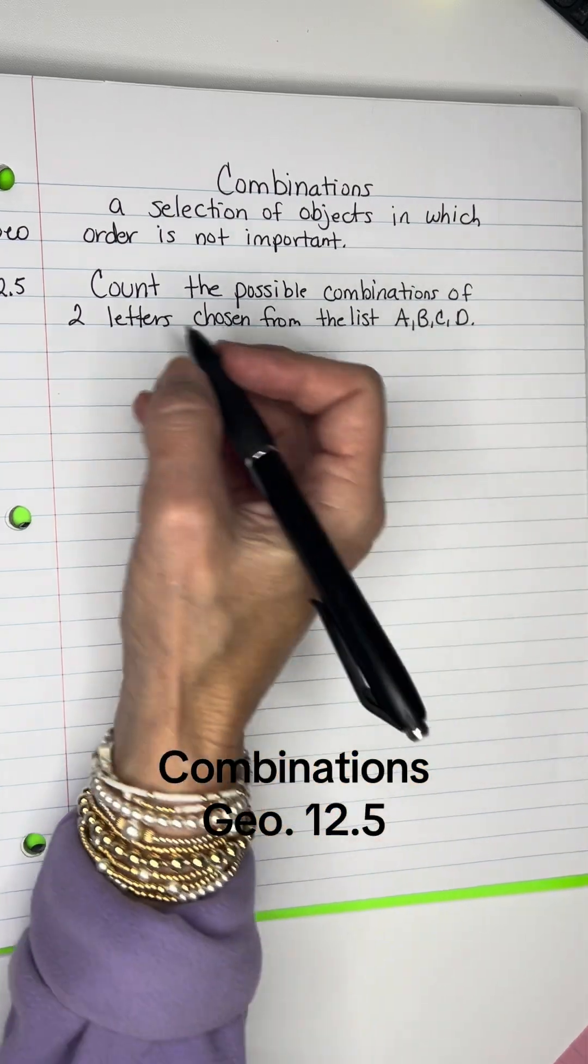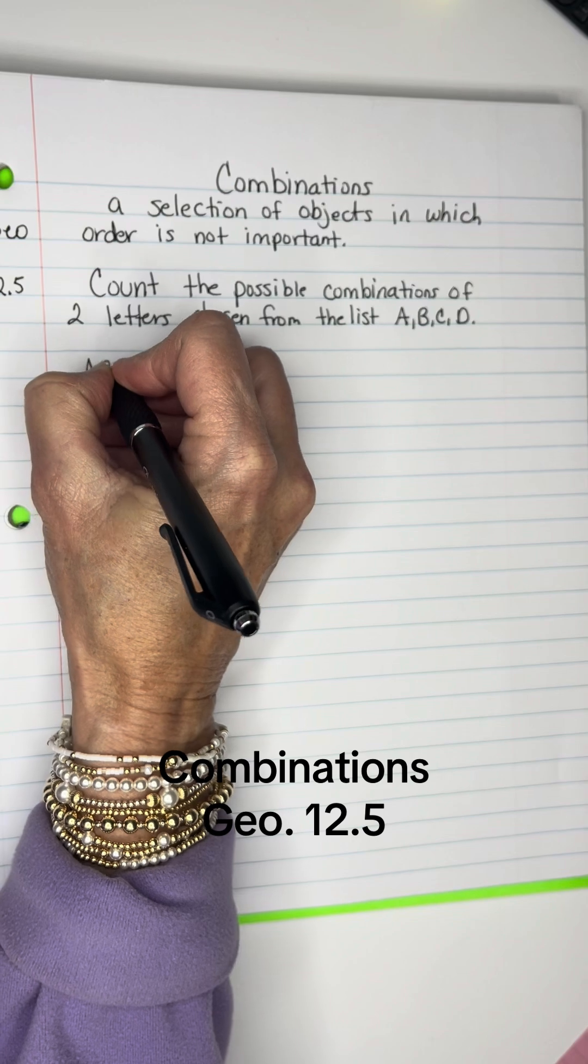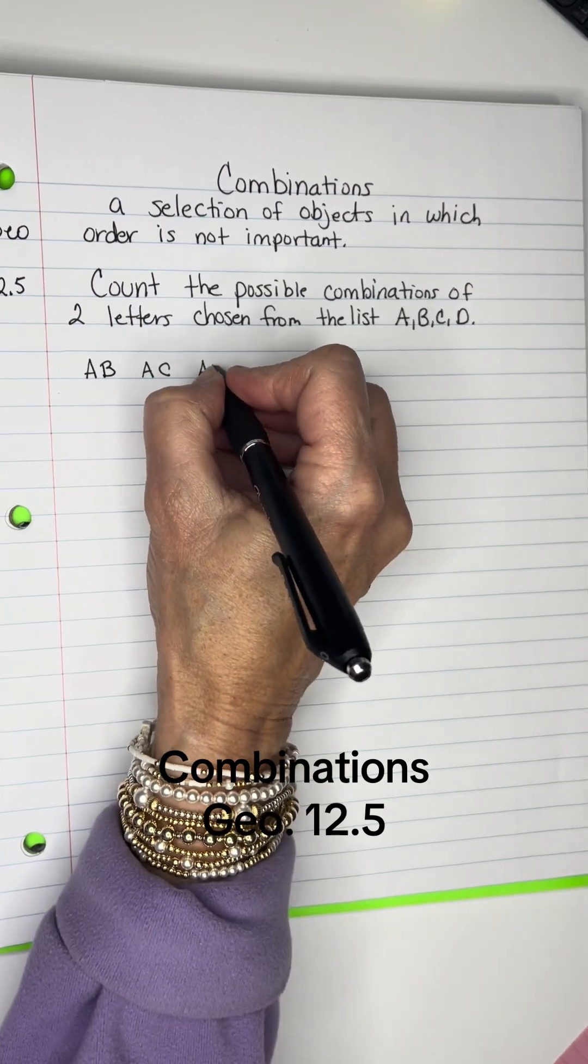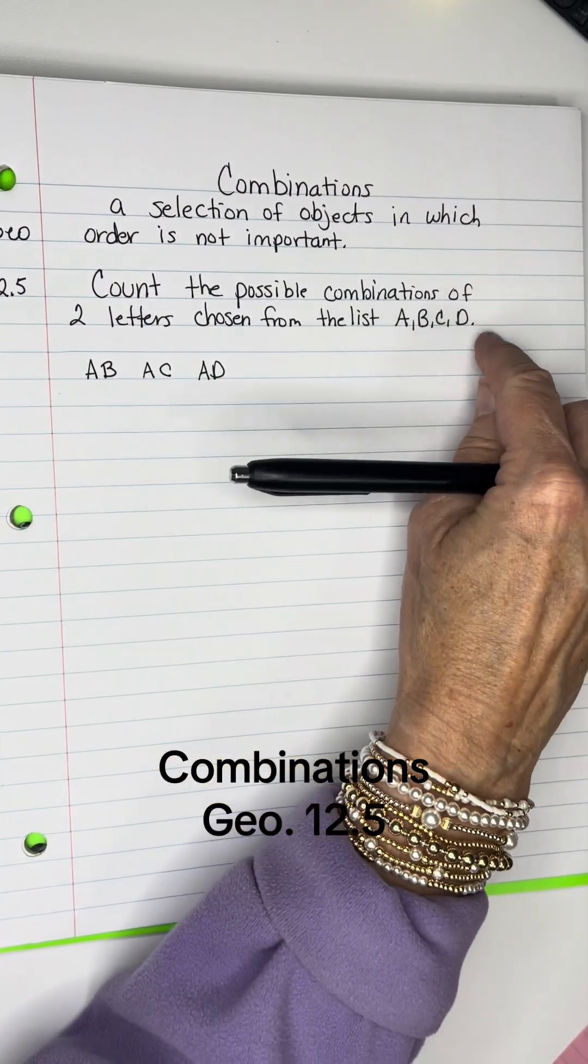For instance, I could get A with B, A with C, or A with D. So I've got A with each one of those.